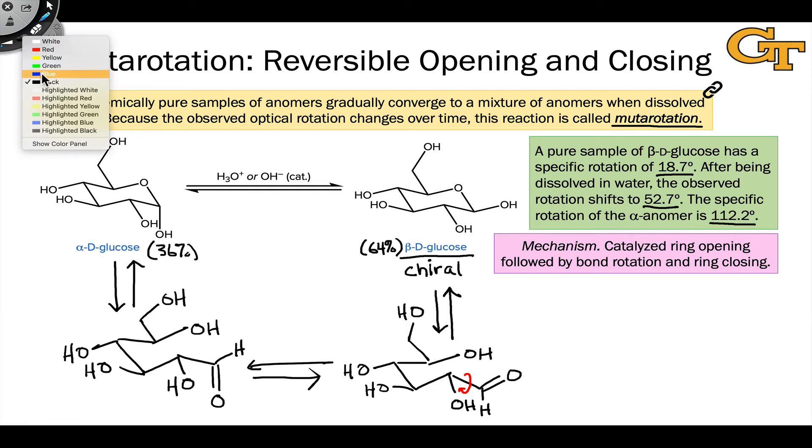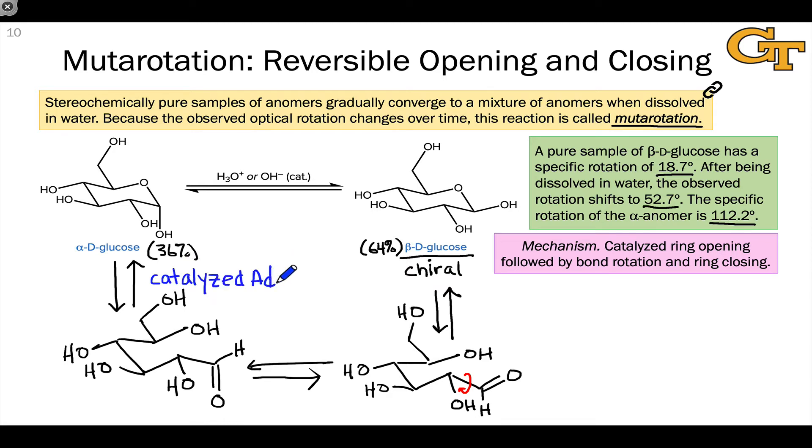The last point about mutarotation is that it uses elementary steps that are either exactly the same as or the microscopic reverses of the ones we saw for cyclization of monosaccharides. This reclosing to form alpha-D-glucose is nothing more than catalyzed addition with proton transfers. The initial ring opening is catalyzed beta elimination, the microscopic reverse of nucleophilic addition.